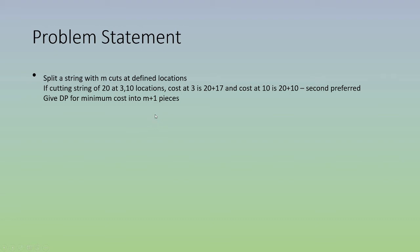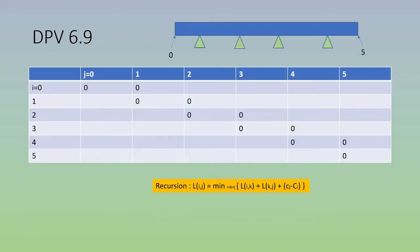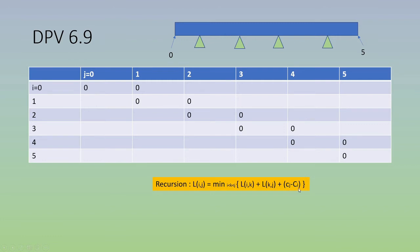The solution thesis is essentially the same idea as chain matrix multiplication. Given a string with m cuts, at any point we make one optimal cut. For l_ij, we find the optimal k, then recursively solve sub-problems. We know we can find l_ik plus l_kj, and the cost of the overall incoming string is c_j minus c_i. We move k between i and j to find the best solution.